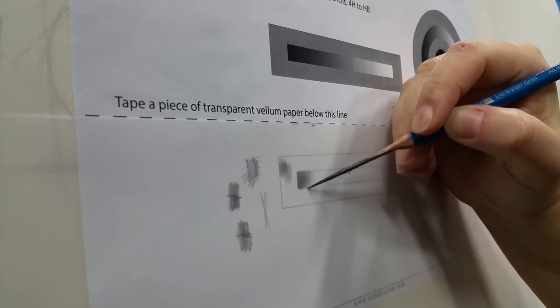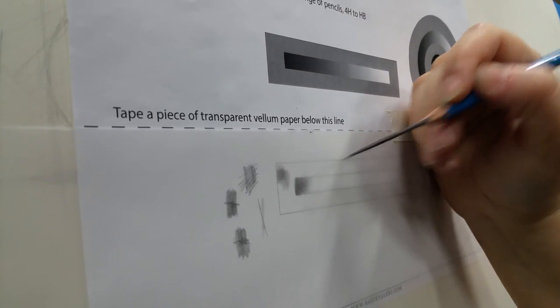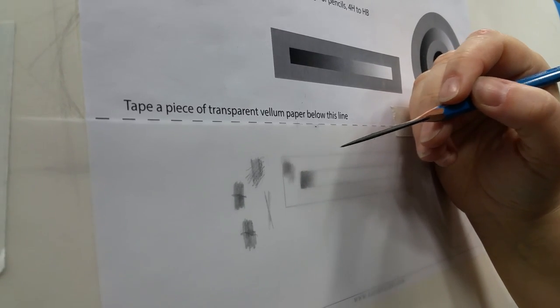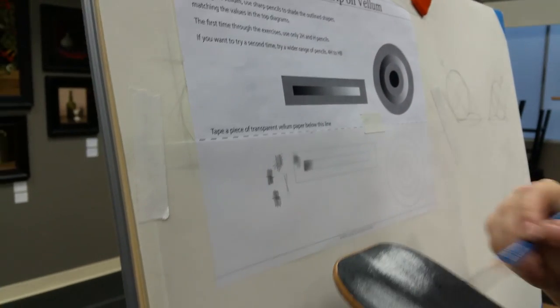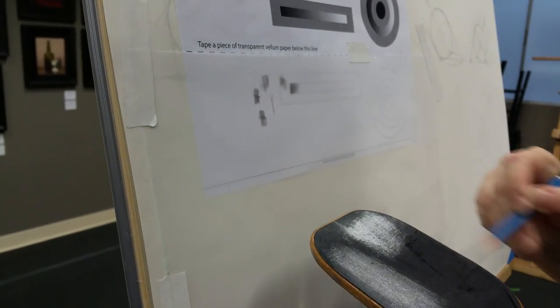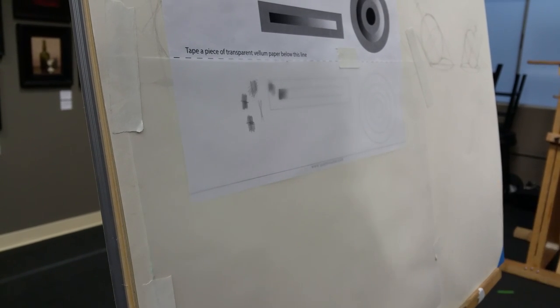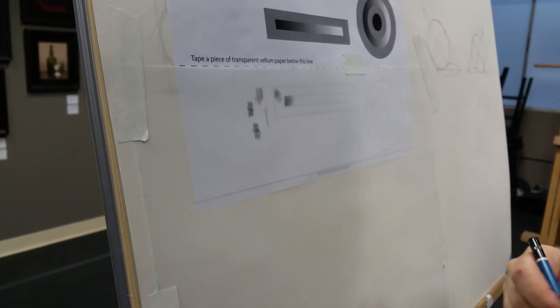Sometimes you can hear the difference in the sound. It won't make such a scritchy sound. It'll just be gliding over the surface. And then you're doing a lot of work, but you're not putting a lot of graphite down. So at that point, I'm going to take my sharpener and just do a little bit of sharpening on the tip. And I do that about every two to four minutes, very often.